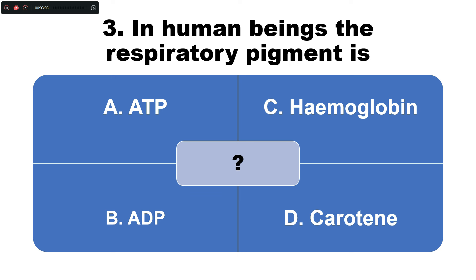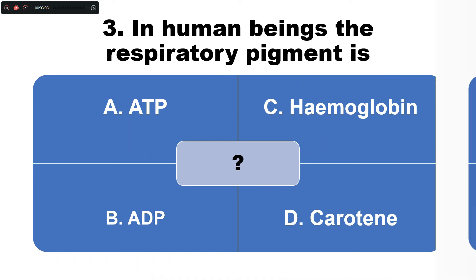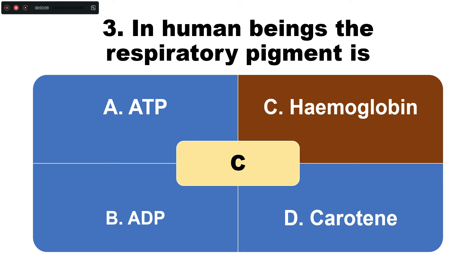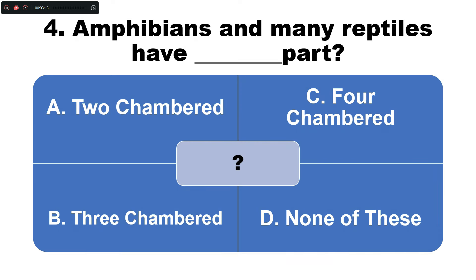Question number three: In human beings, the respiratory pigment is — option A: ATP, B: ADP, C: hemoglobin, D: carotin. The correct answer is option C — hemoglobin is the respiratory pigment in humans.